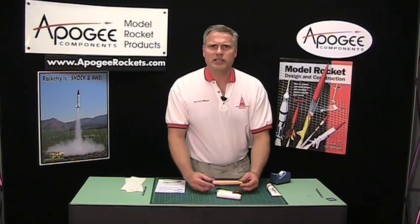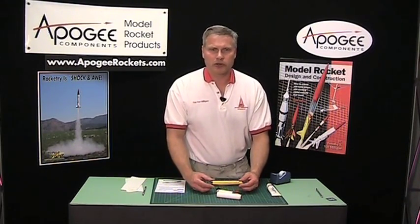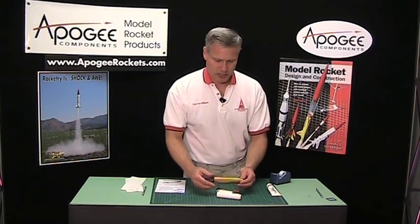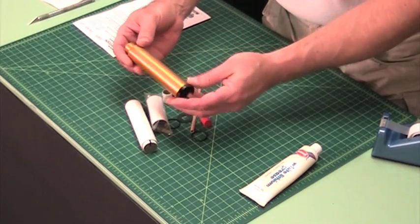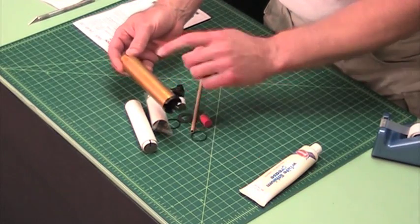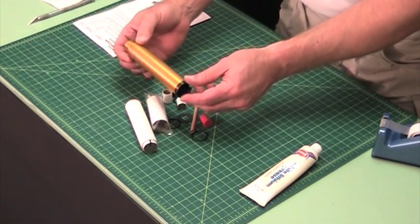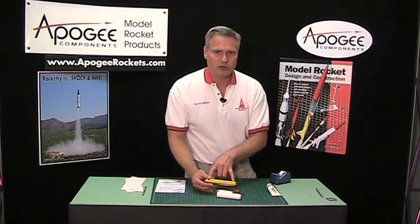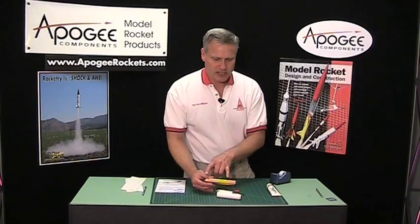Many people have asked me how easy is it to put together a reload. Well, in this video I'll show you how to do that and how easy it really is. This is the case we're going to be assembling into, an RMS 40-120 casing. That means it goes from 40 Newton seconds to 120 Newton seconds, any size in between.